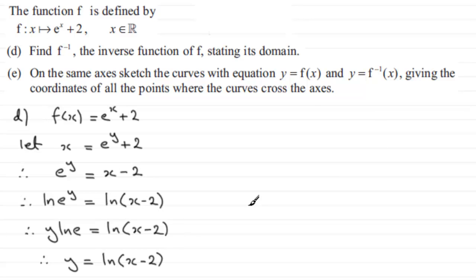That leaves us with therefore y equals the natural log of x minus two. We've now made y the subject, and when we reach that stage all we've got to do is just replace the y with the inverse function. So you could write therefore the inverse function of x equals the natural log of x minus two.